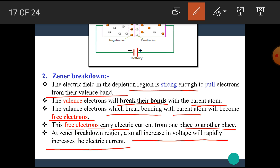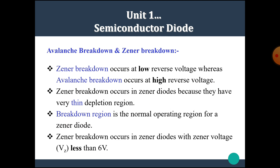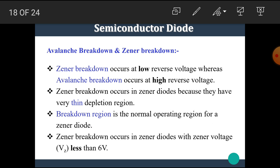These free electrons carry electric current. At the Zener breakdown region, a small increase in reverse voltage will rapidly increase the electric current. Because heavily doped PN junctions form a small depletion layer, a strong electric field is generated. Due to this strong electric field, valence electrons break their covalent bonds and become free electrons. The large number of free electrons causes a large current and breakdown occurs. In the Zener diode, Zener breakdown is preferred because the breakdown voltage value can be adjusted very sharply, unlike avalanche breakdown.